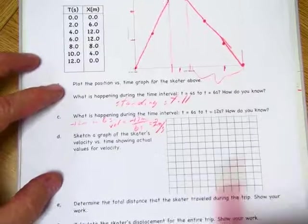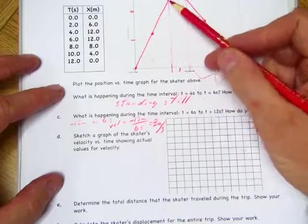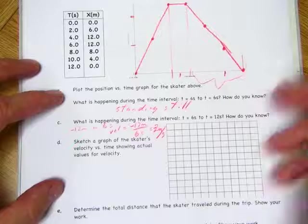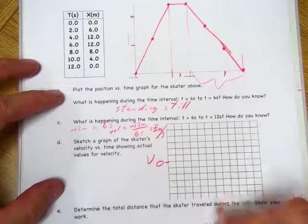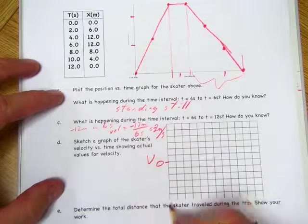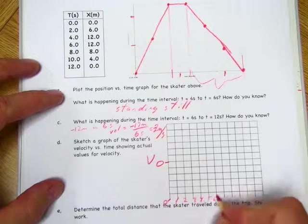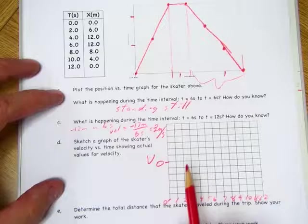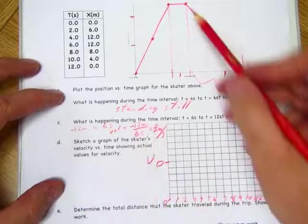Now, sketch a graph of the skater's velocity versus time. Well, okay, we know it was going positive at one point and then stood still and then back in the other direction. So we're going to have a velocity versus time here. And we'll go ahead and make this 0, 1, 2, 3, 4, 5, 6, 7, 8, 9, 10, 11, 12.